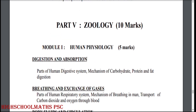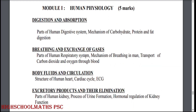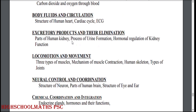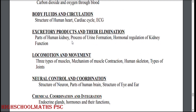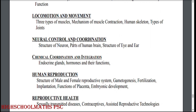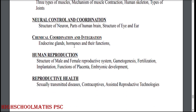Part 5, Zoology, last part, 10 marks. Module 1: Human physiology. Digestion and absorption: parts of the human digestive system, mechanism of carbohydrate, protein and fat digestion. Breathing and exchange of gas. Body fluids and circulation. Excretory products and their elimination. Locomotion and movement. Neural control and coordination. Chemical coordination and integration.